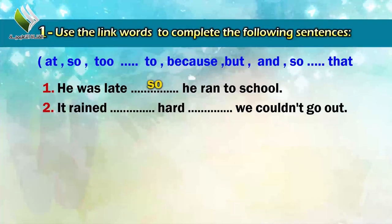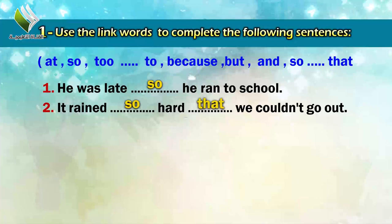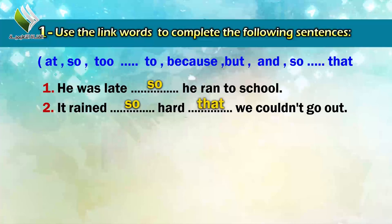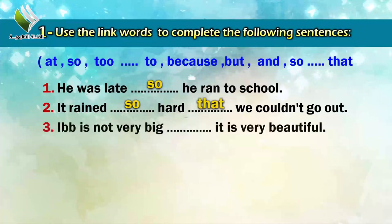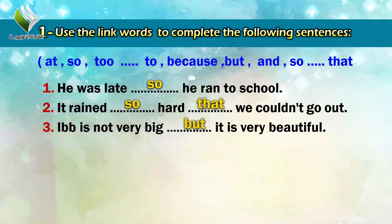Number two: 'It rained so hard that we couldn't go out.' Here we have two blanks. The first answer is 'so', the second answer is 'that'. Sentence number three: 'It is not very big, but it is very beautiful.' The answer is 'but'.